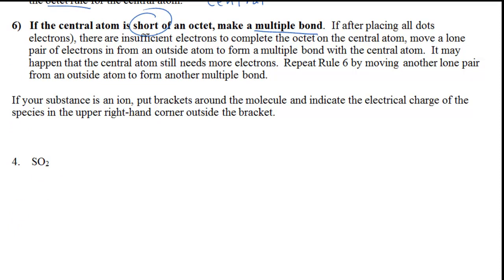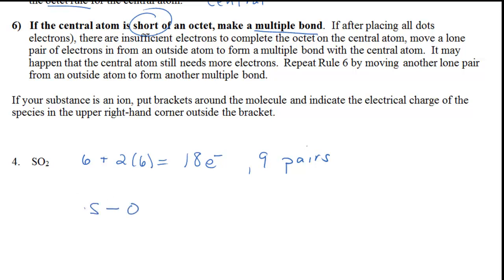SO2 — sulfur dioxide. Sulfur and oxygen are both in group 6 or group 16, that's 6 valence electrons. So 6 for sulfur, 2 oxygens at 6 each — 18 valence electrons, or 9 pairs if we work with pairs of electrons. Oxygen is right next to fluorine, so it is the second most electronegative element, meaning sulfur is less electronegative — we put that in the middle. We connect with single bonds, then start with the outer atoms placing lone pairs to complete the octets.